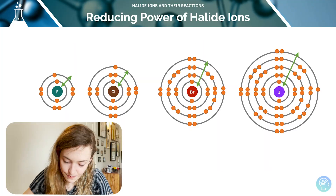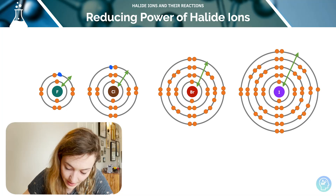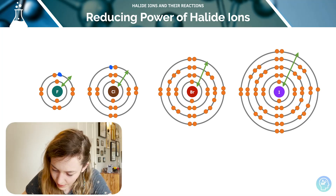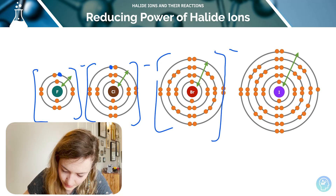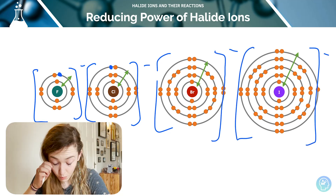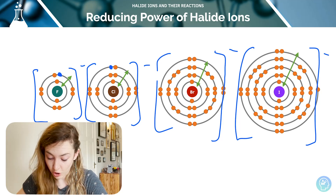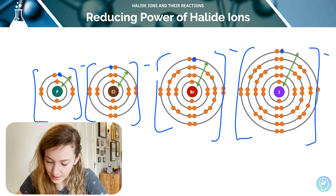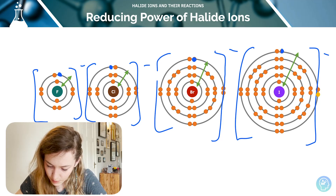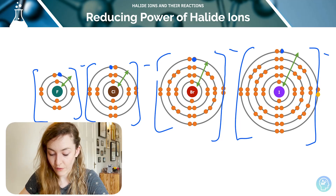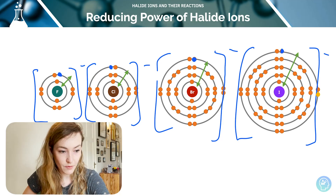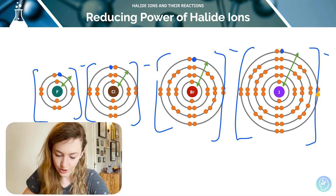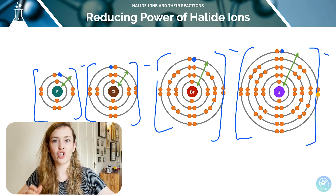Looking at an example: iodine has a much larger distance between the positive nucleus and the outermost electron it's going to lose. Therefore, it's much easier for iodide to lose that outermost electron and act as a reducing agent than it is for fluorine or chlorine. It's the shielding effect that weakens that attraction between the outermost electron and the positive nucleus.